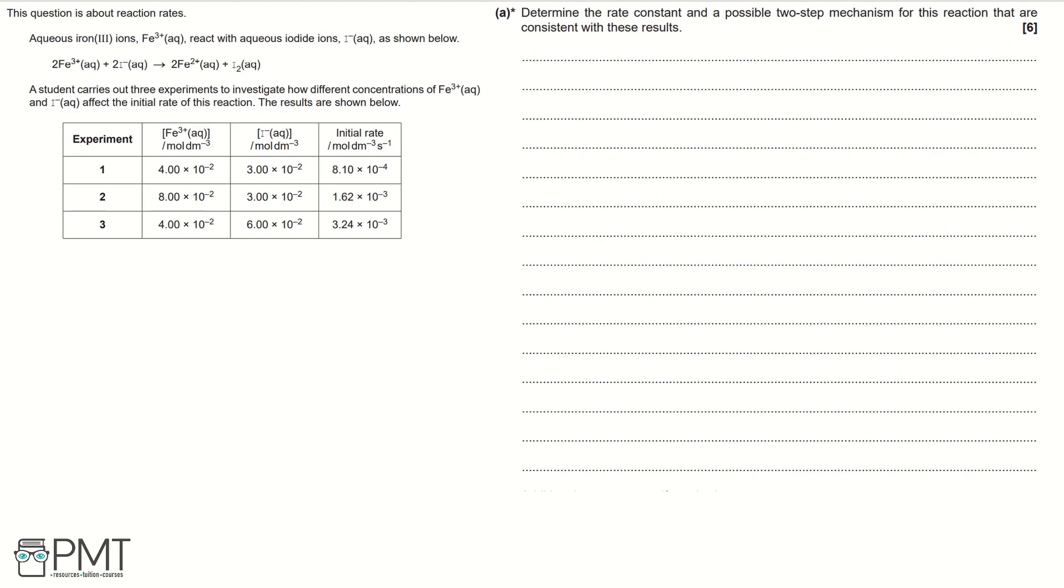Firstly we need to determine the order of reaction for Fe³⁺ and I⁻. Let's begin with Fe³⁺. We're looking for where it has increased by a certain value here—it's increased by two and where I⁻ has stayed the same or multiplied by one. Then you need to look at the initial rate and this has also multiplied by two. Therefore, in the rate equation, we would write rate equals K, square brackets Fe³⁺ to the power of one because Fe³⁺ is a first order reaction.